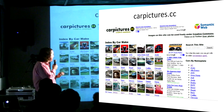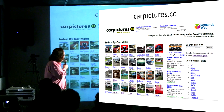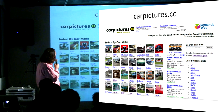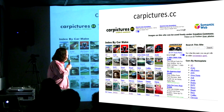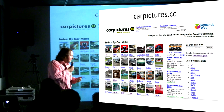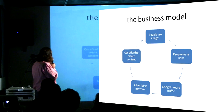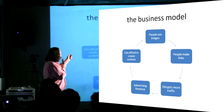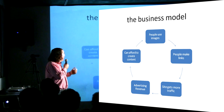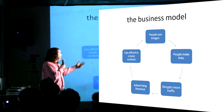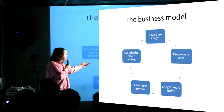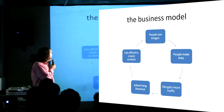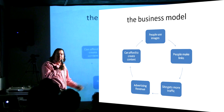I wanted to make this bigger. Cars are a categorical kind of thing very similar to animals, so I made a website about cars. By this point I'm actually getting some real ad revenue and thinking about how to scale it up. The business model is: people use my images, they make links to my website, my site gets more traffic, I get more advertising revenue, and I can use that revenue to gather more content. It's a virtuous circle.